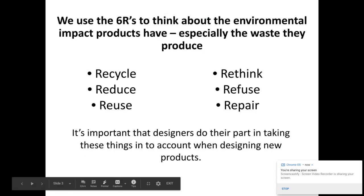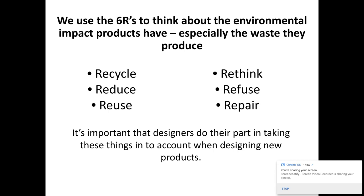We're going to have a little look at sustainability, and in particular the Six Rs of sustainability. These are the ways products impact the environment, especially the waste they produce, and how we as designers, users, or consumers can try to reduce that waste. The Six Rs are: recycle, reduce, reuse, rethink, refuse, and repair. I like to think of them in two halves — the physical ways of thinking sustainably are recycle, reduce, and reuse, while rethink, refuse, and repair are more conceptual or societal changes.